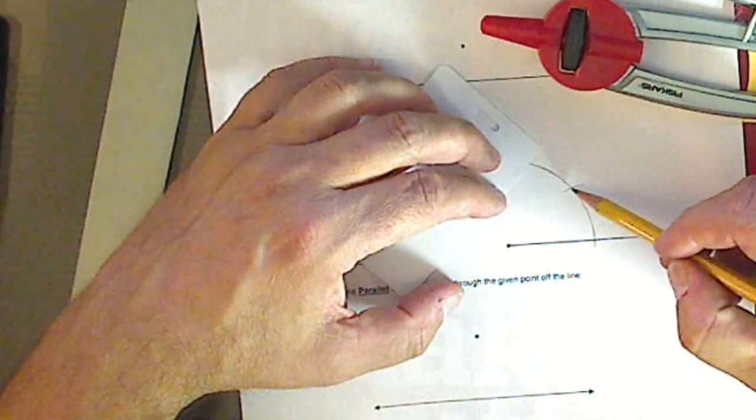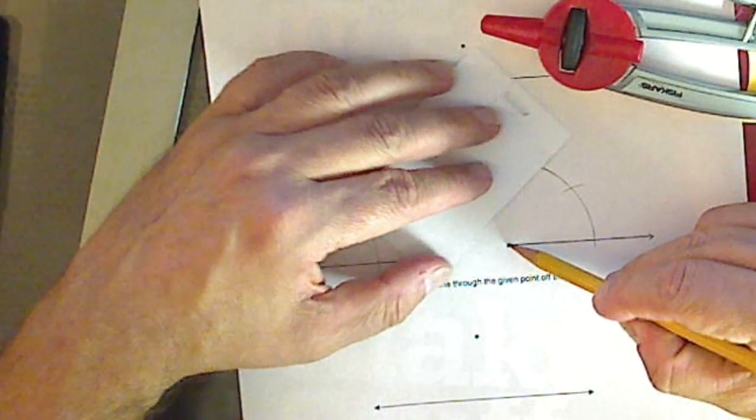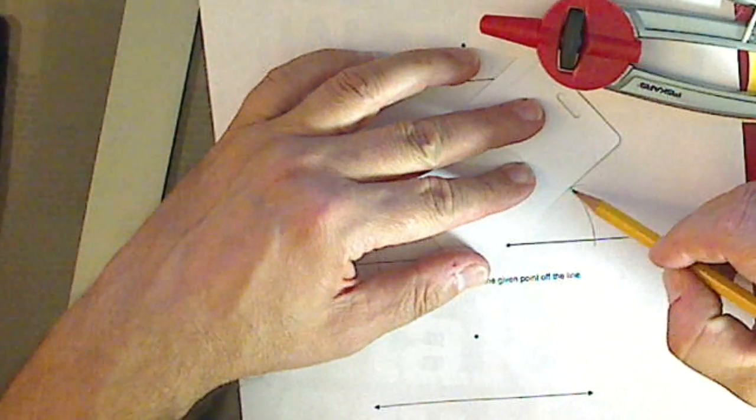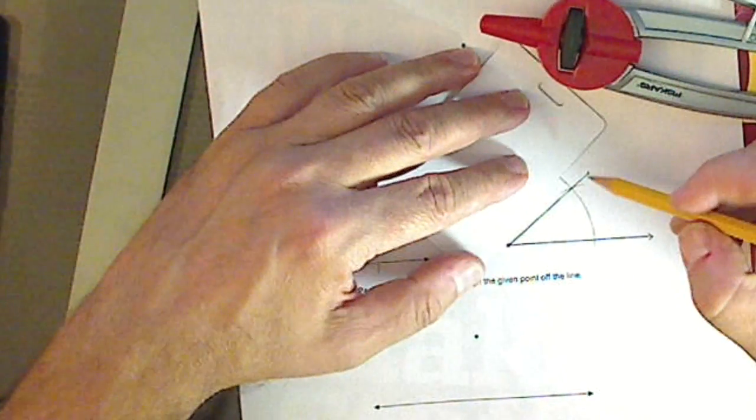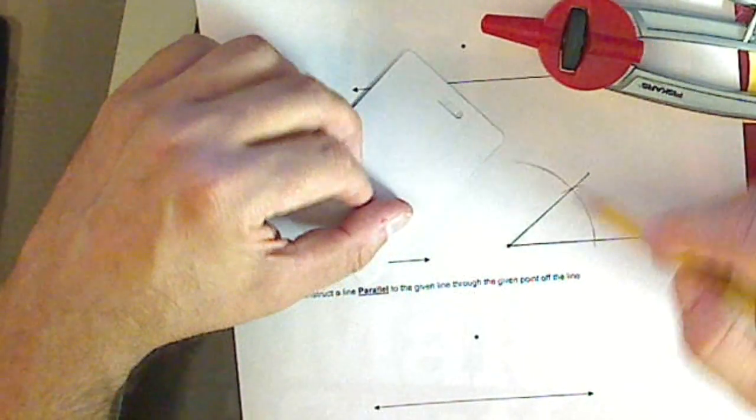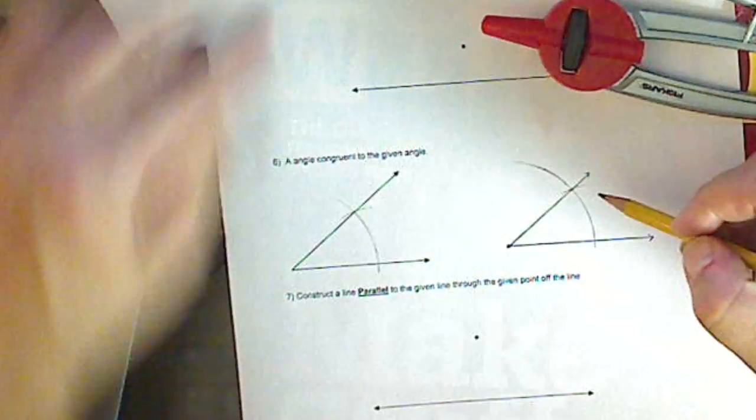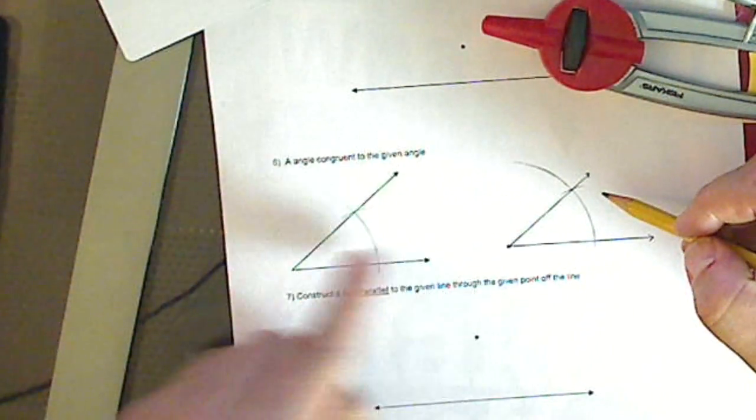Now, two points establish a line. So one, two. And when I connect those two with a new ray, I have the same amount right there.